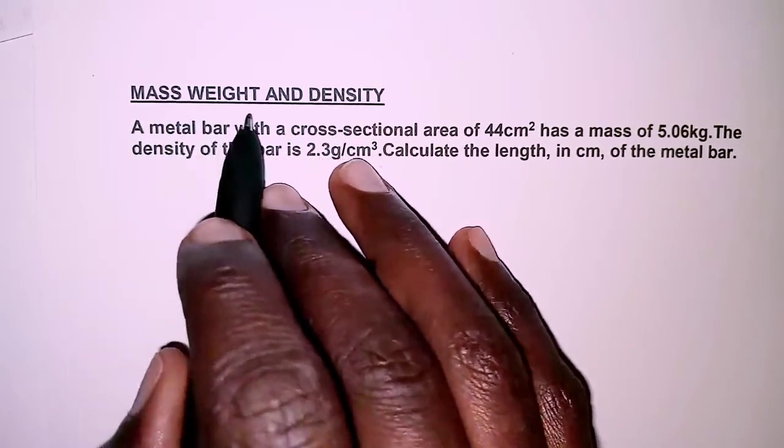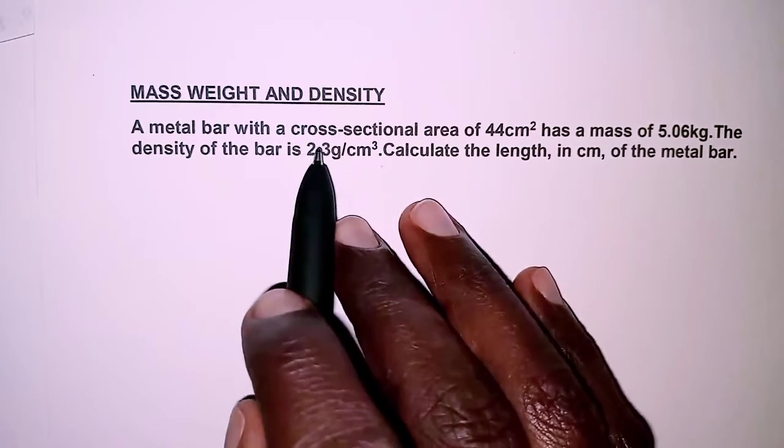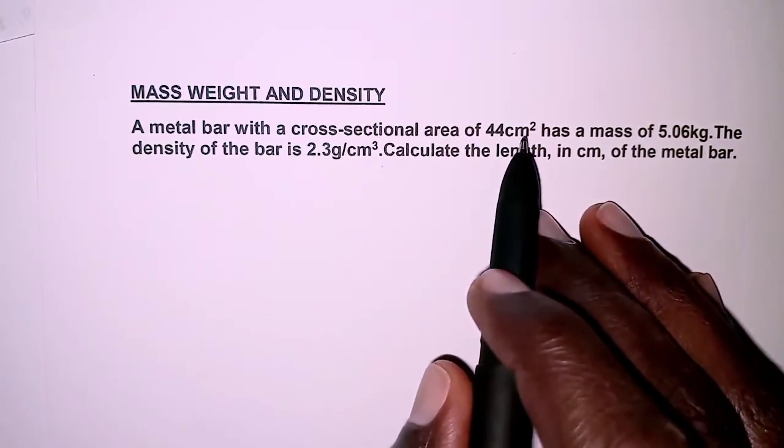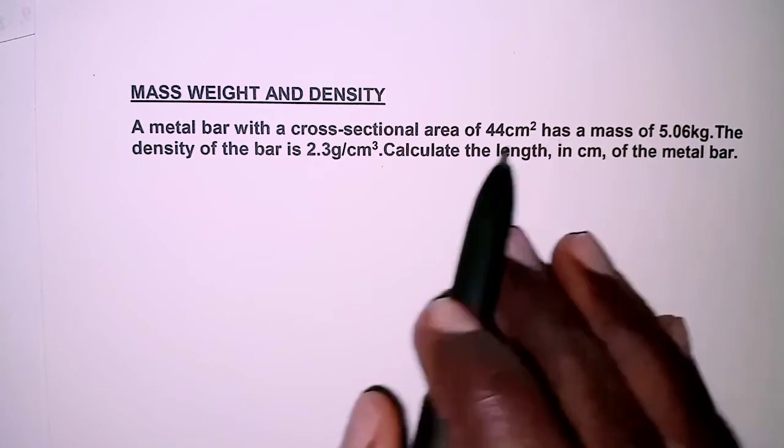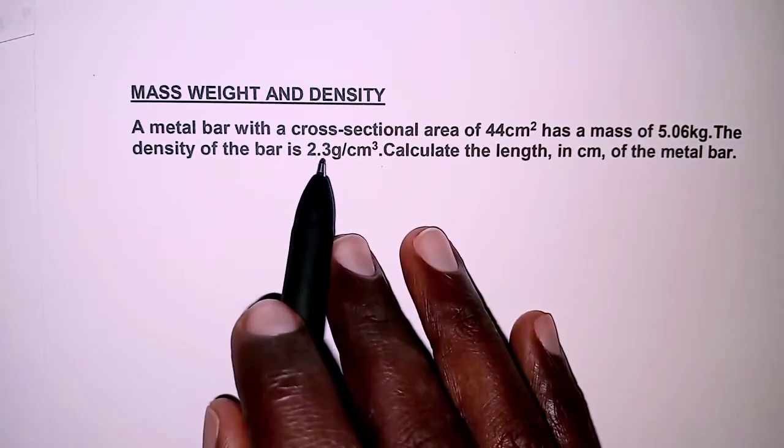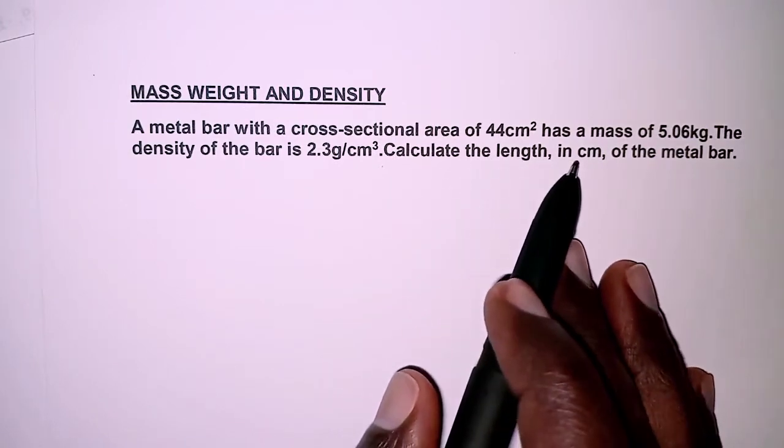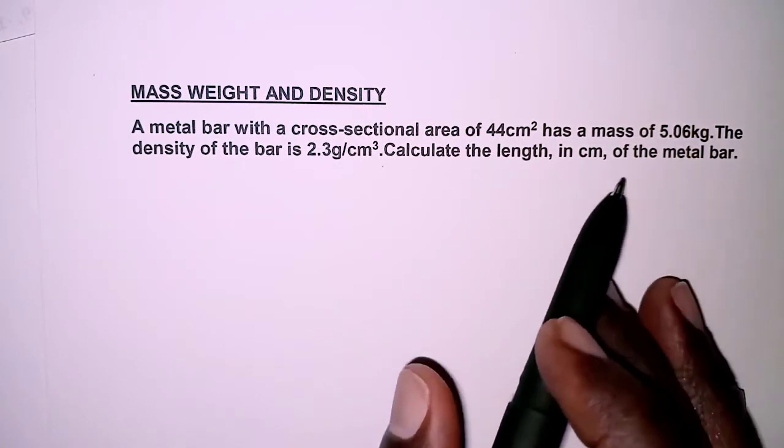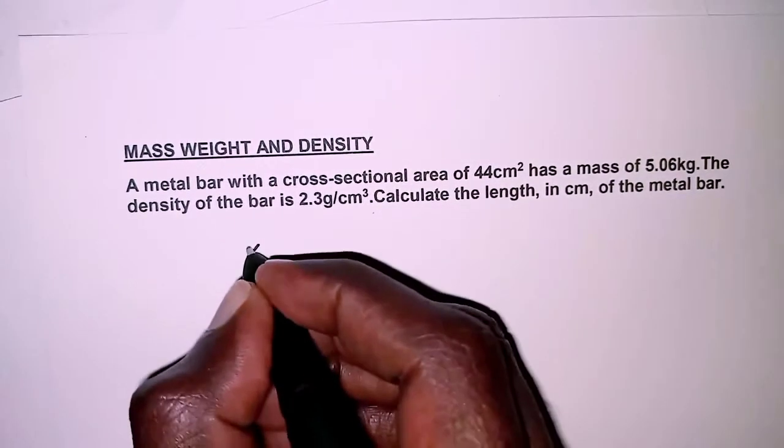The question today is on mass, weight, and density. The question reads: a metal bar with a cross-sectional area of 44 square centimeters has a mass of 5.06 kilograms. The density of the bar is 2.3 grams per cubic centimeter. Calculate the length, in centimeters, of the metal bar.